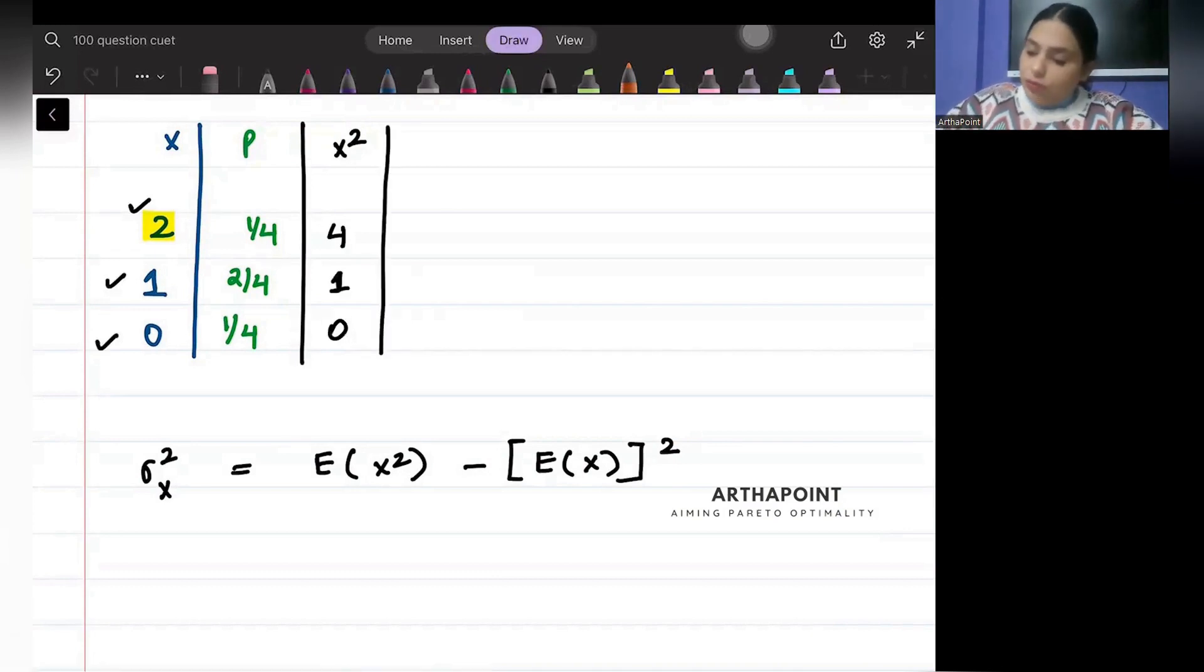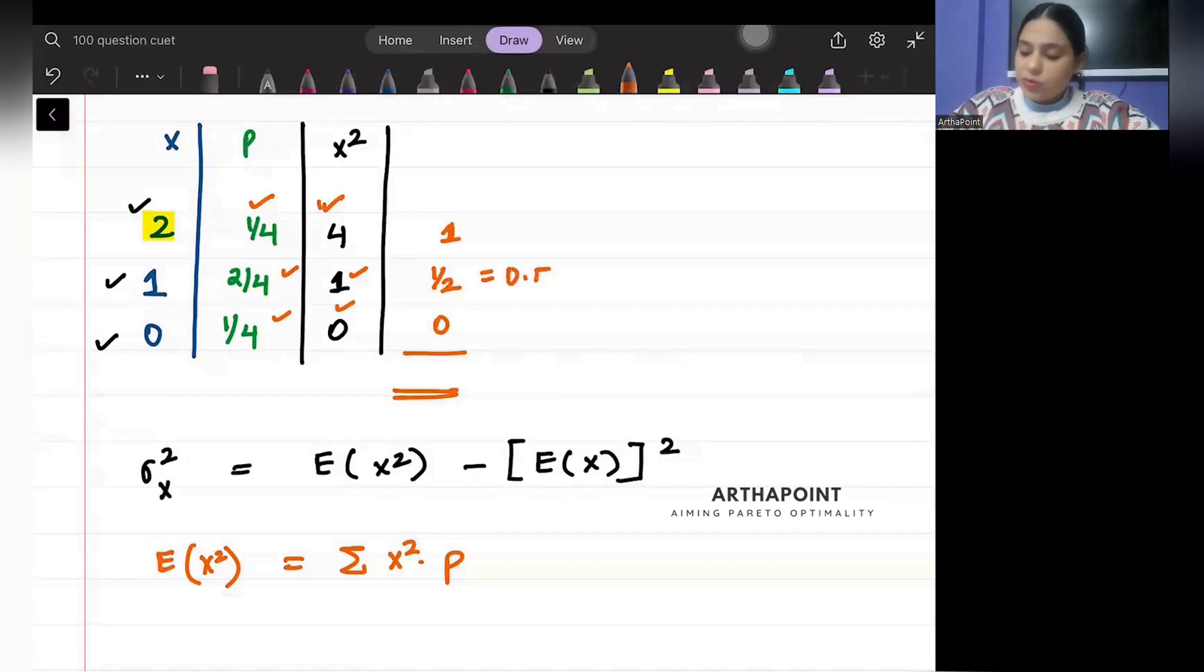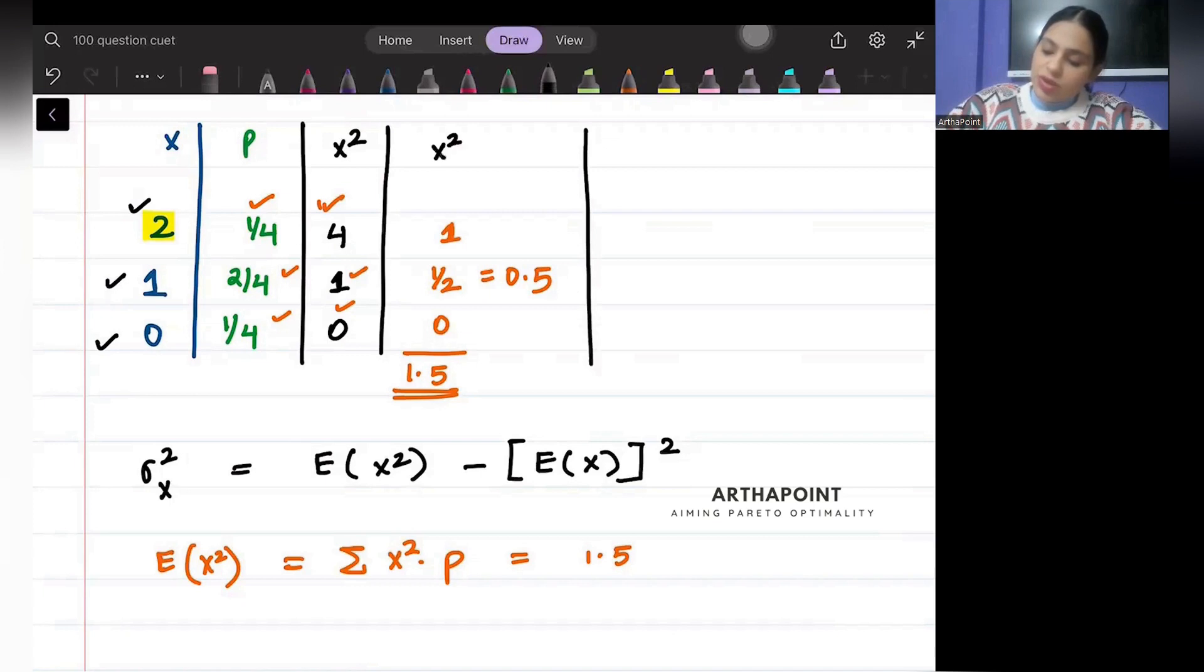What will be E(x²)? E(x²) will be x² into p summed up. So x² into p: four into one by four is one. One into two by four is two by four, which means half. Zero into one by four is zero. So if I sum this up, I will get one plus 0.5, which is 1.5. So this will be 1.5. This is x² into p.